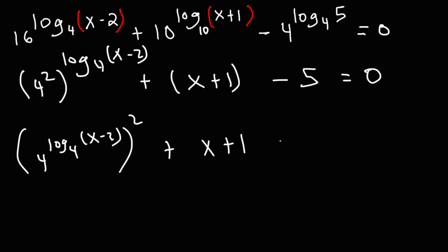We don't need the parentheses around x plus 1 at this point. Now, this we could simplify. 4 raised to the log base 4 of x minus 2. The 4s cancel, and we're just going to get x minus 2. So we have x minus 2 squared plus x plus 1 minus 5. 1 minus 5 is negative 4. So that's what we now have at this point.